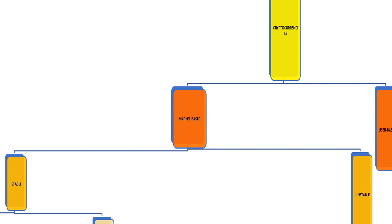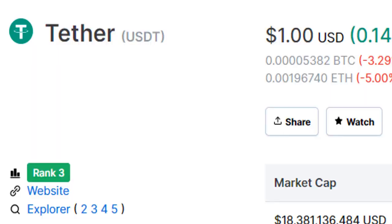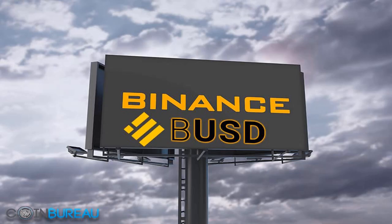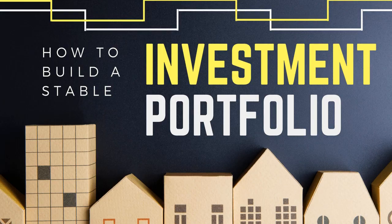Within market-based cryptocurrencies we have two forms: stable and non-stable. Stable market-based cryptocurrencies have their value pegged to one dollar — they do not rise or fall. Their value is constant. Examples include USDT, USD Coin, and Binance USD. Their purpose is to stabilize assets, since Bitcoin and Ethereum are always dropping and rising.